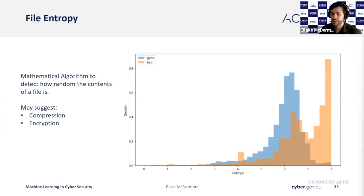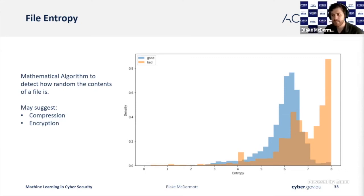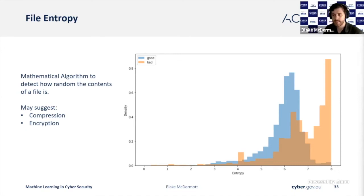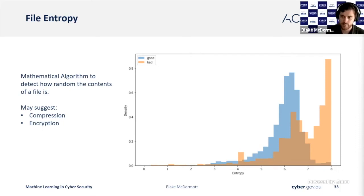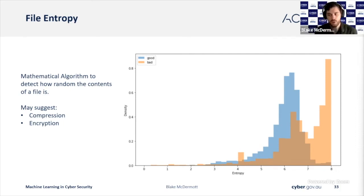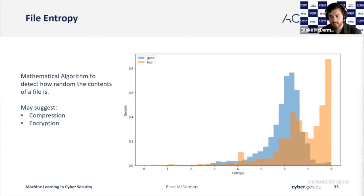Despite the ability for actors to move into memory and become file-less, we still see a large number of actors relying on executables during a compromise. One ML model can iterate through all of the executables on an image, pull out the relevant information, and pass it through the ML model. This usually is not enough to detect unknown malware on its own, but it can give us some great starting points. File entropy can be a great example of this — entropy calculates the frequency of bytes throughout a file, and if they contain a regular frequency, this can show signs of compression or encryption. While this is not an inherently malicious thing, it is more commonly used by malicious files, as legitimate files less commonly have a reason to compress or encrypt themselves.